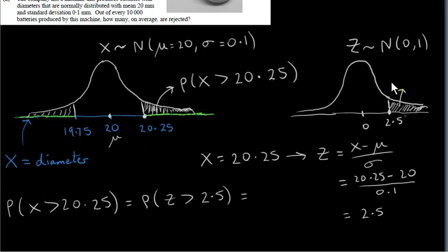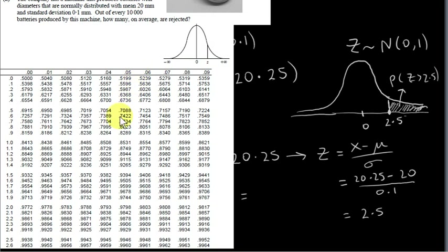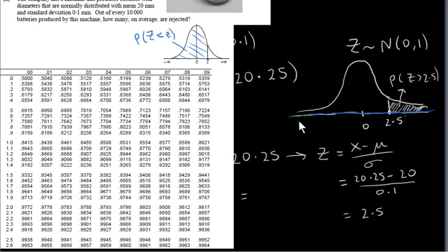So we want the probability that Z is greater than 2.5. For this we go to standard normal tables. These particular tables give us the area to the left of Z — the area under the curve to the left of a given value. That area equals the probability that the random variable Z is less than little z. Capital Z is the random variable; little z is a particular value. Other tables may work differently.